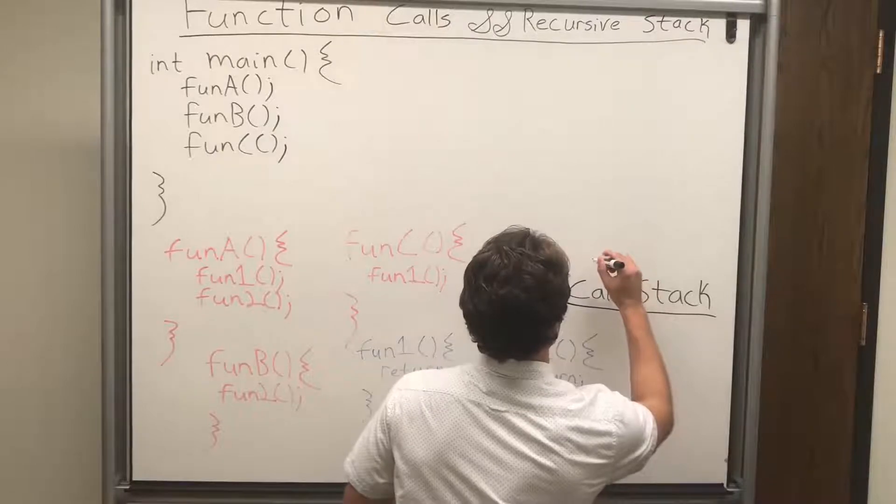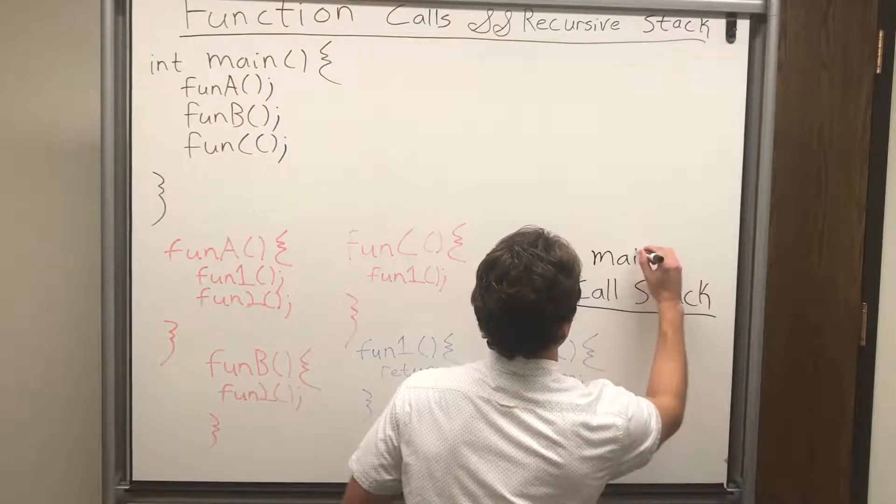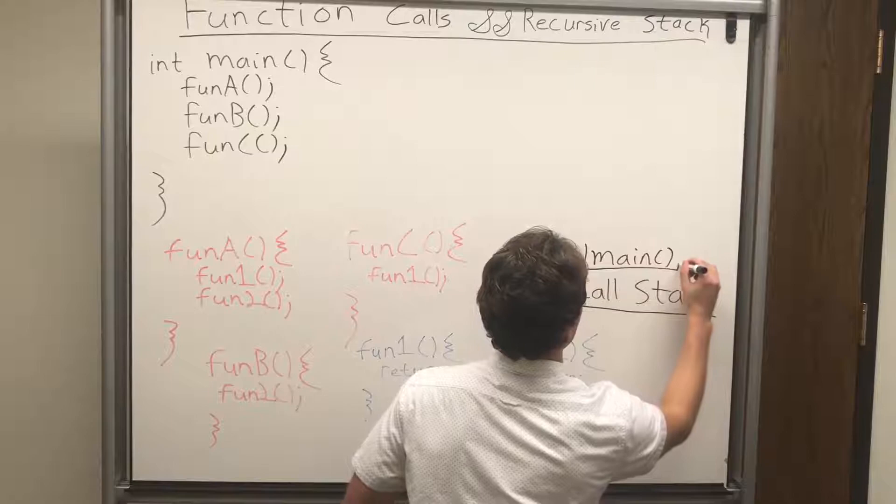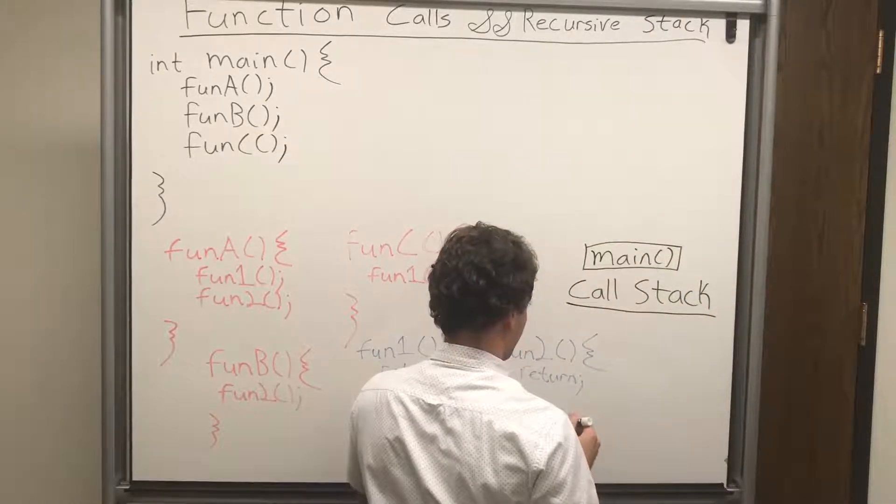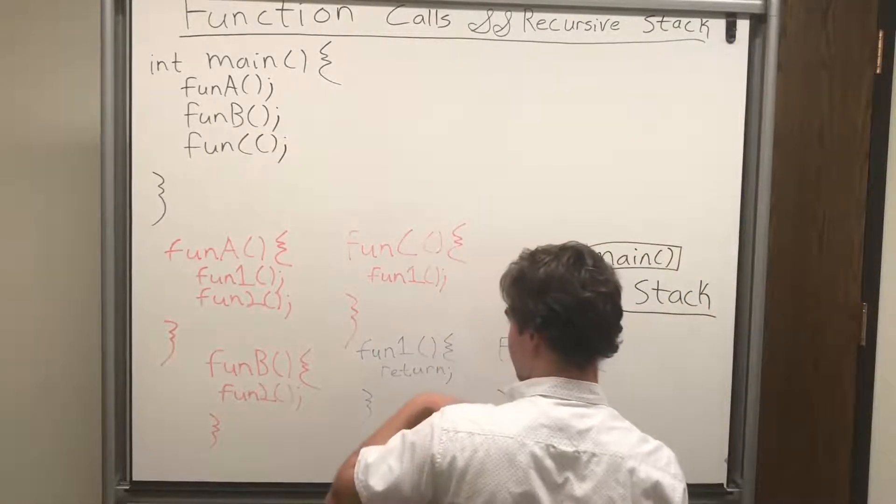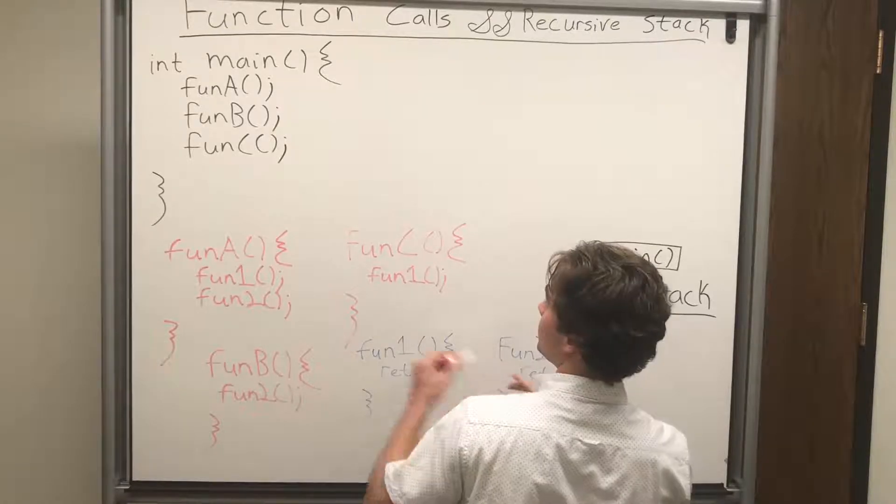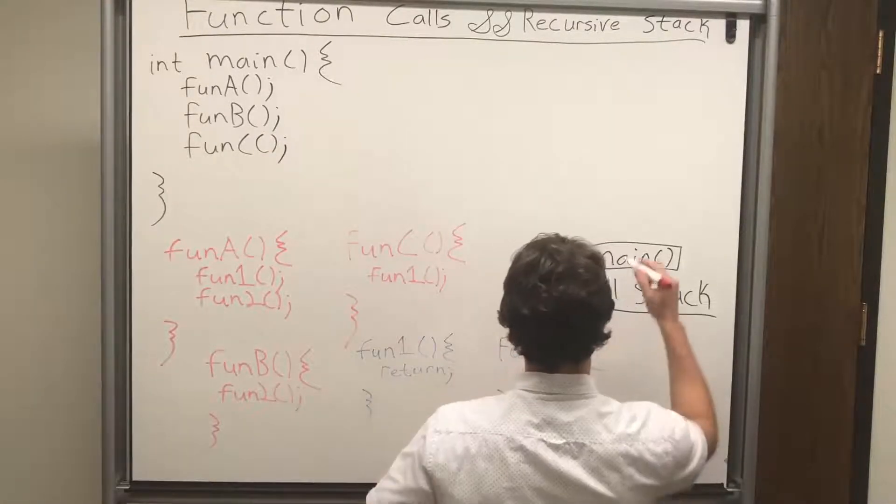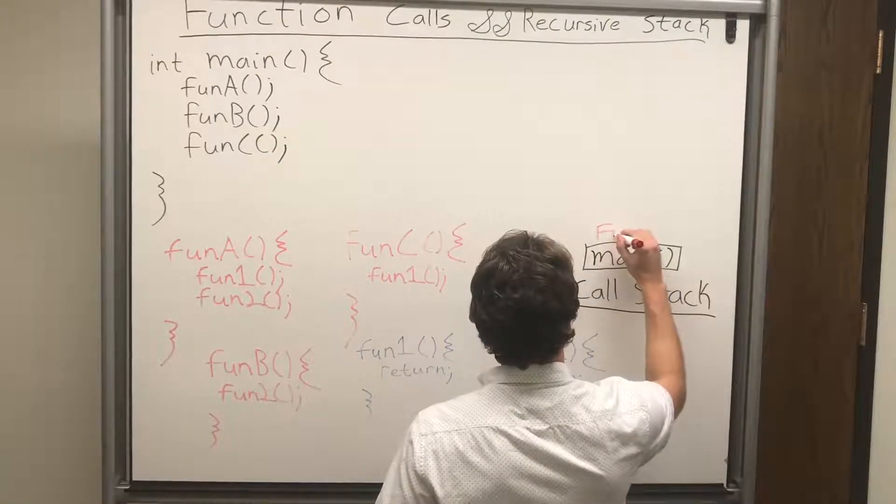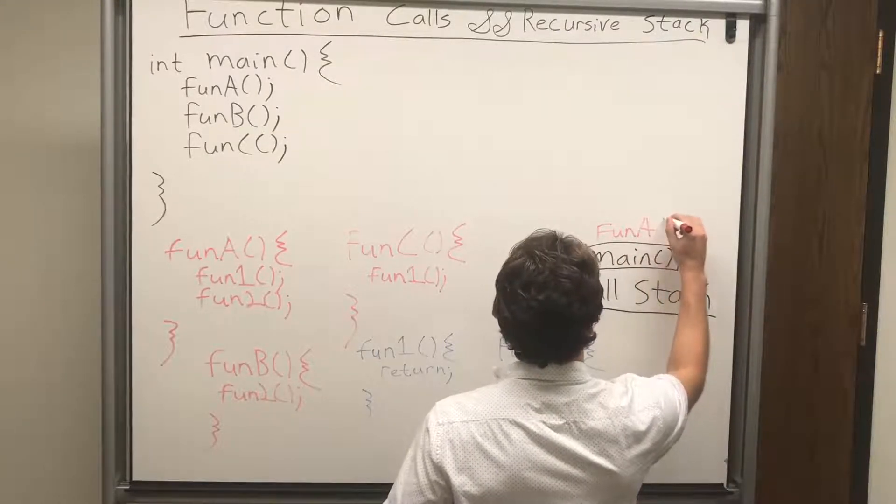So why don't we just go through an example. So here's our call stack right now. We start with main, because it's the main program. And after that, we go through, we have function A, which is up top. So we have to call the function, so we write it on our call stack. Function A. Great.